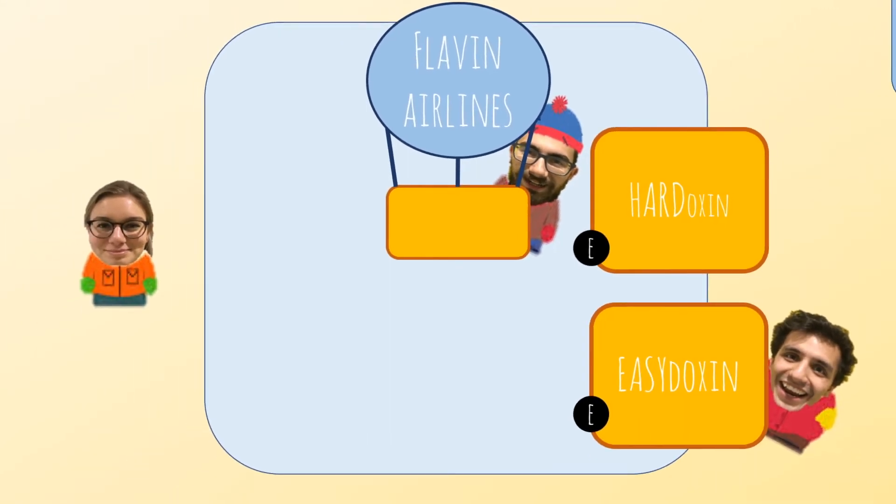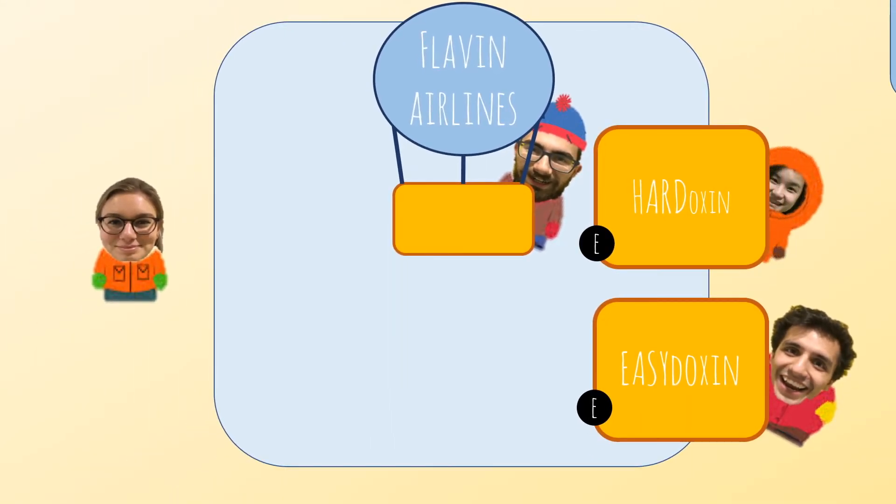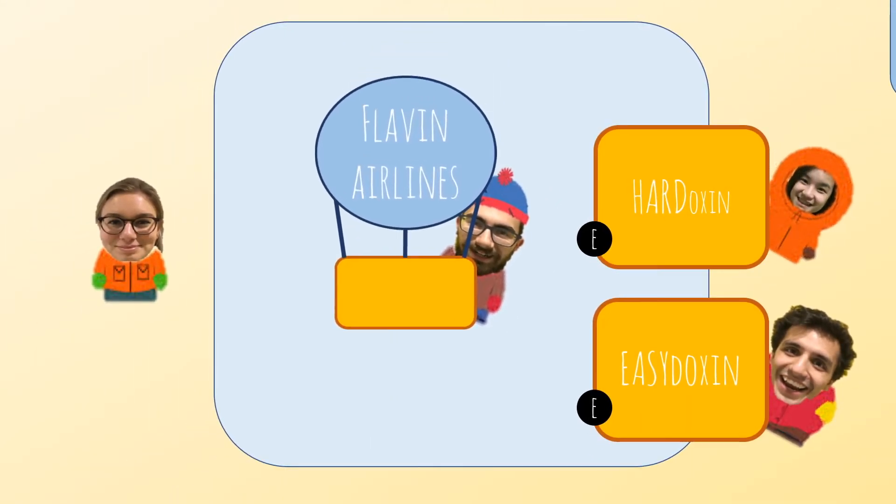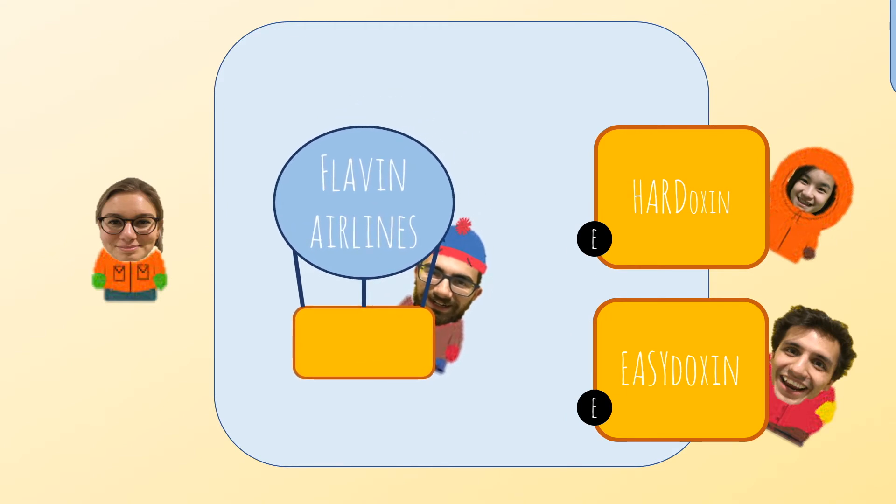As the flavin reaches a higher energy level, it can donate the electron in a favorable way. Donating all of its electrons makes flavin lose its energy and return to the previous state.